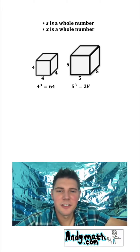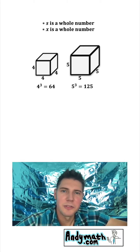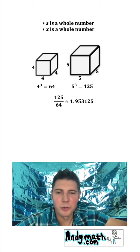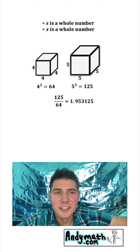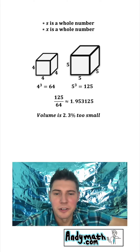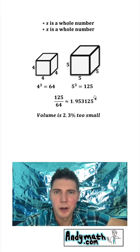Well, 4 cubed is 64, and 5 cubed is 125, and 125 divided by 64 is approximately 1.953125. So this is not double. It's close, but it's not double. In fact, the volume of this big one is about 2.3% too small.